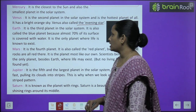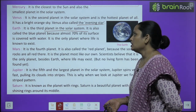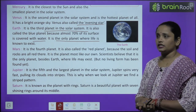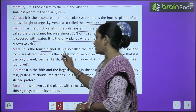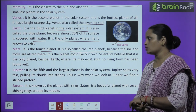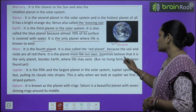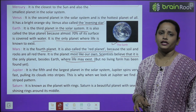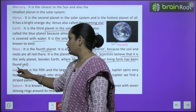Next comes Earth, the third planet in the solar system. It is also called the blue planet because seventy percent of it is covered with water. It is the only planet where life is known to exist. Mars is the fourth planet and is called the red planet because its soil and rocks are red in color. It is the planet most like our own. Scientists believe it is the only planet besides Earth where life may exist, but no living form has been found yet.